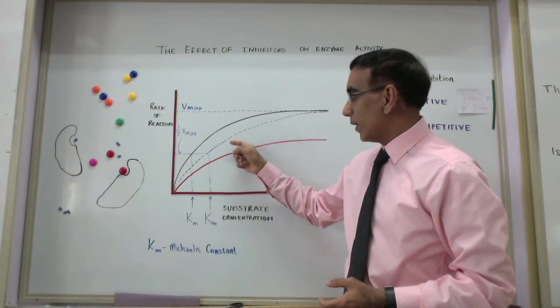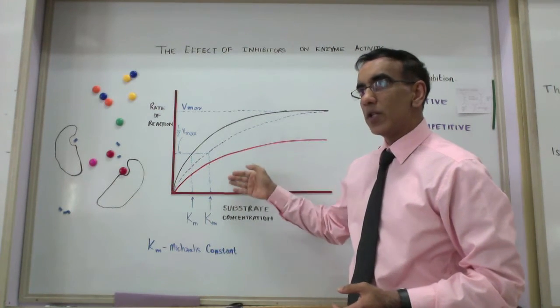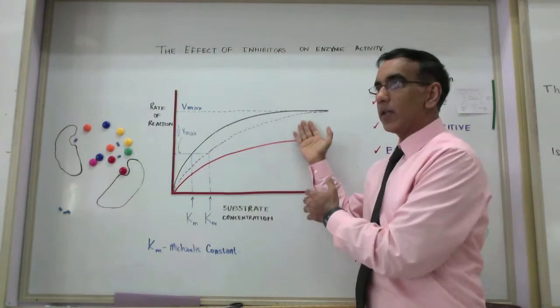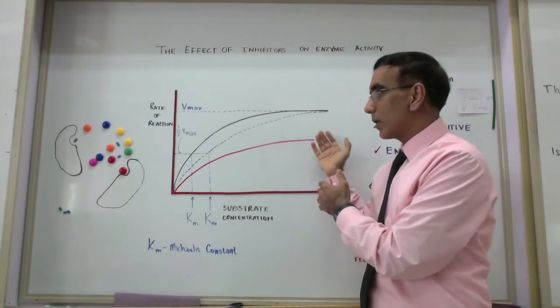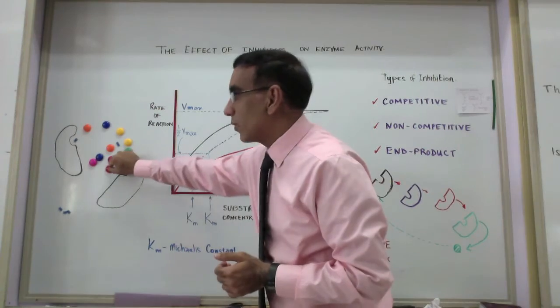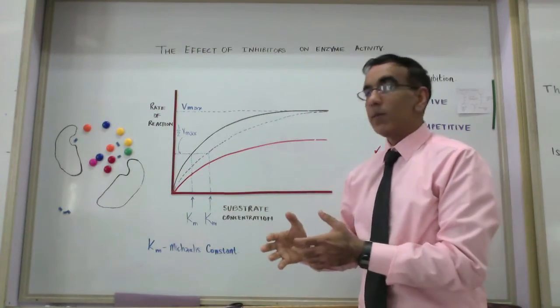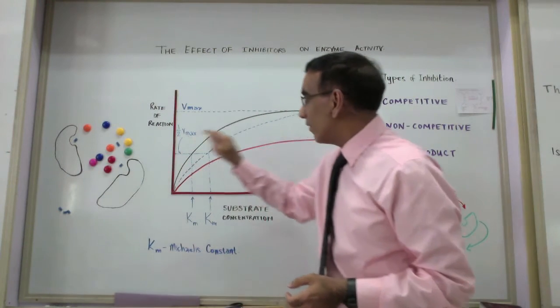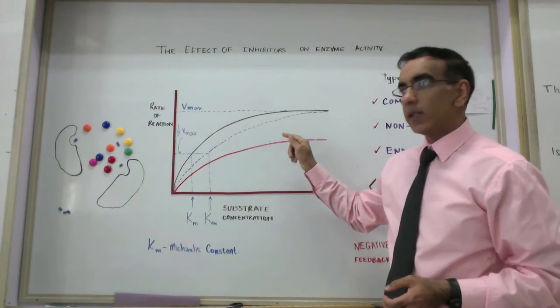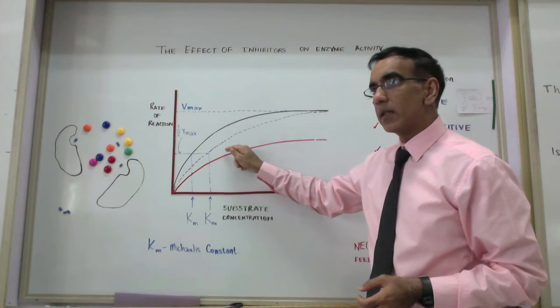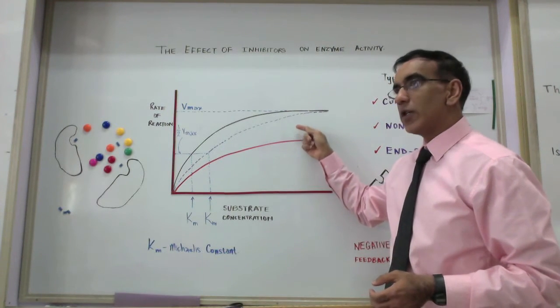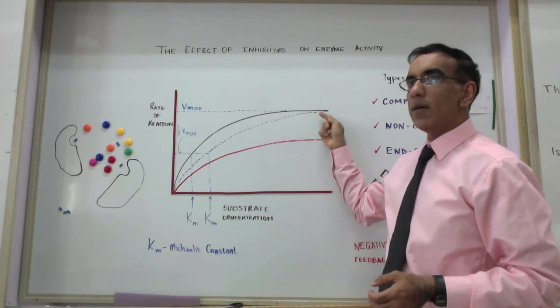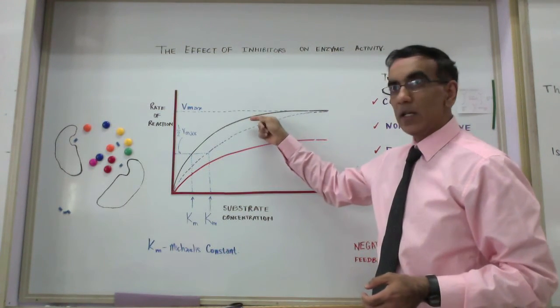But this slowing down is really only effective at low substrate concentrations. Once you have enough substrate around, or a high substrate concentration, then the likelihood of the enzyme-substrate complex being formed becomes very high. And the presence of the inhibitor effectively becomes insignificant. So ultimately, with a competitive inhibitor present, once the substrate concentration is high enough, the rate of the reaction reaches the same Vmax as the reaction without the inhibitor.